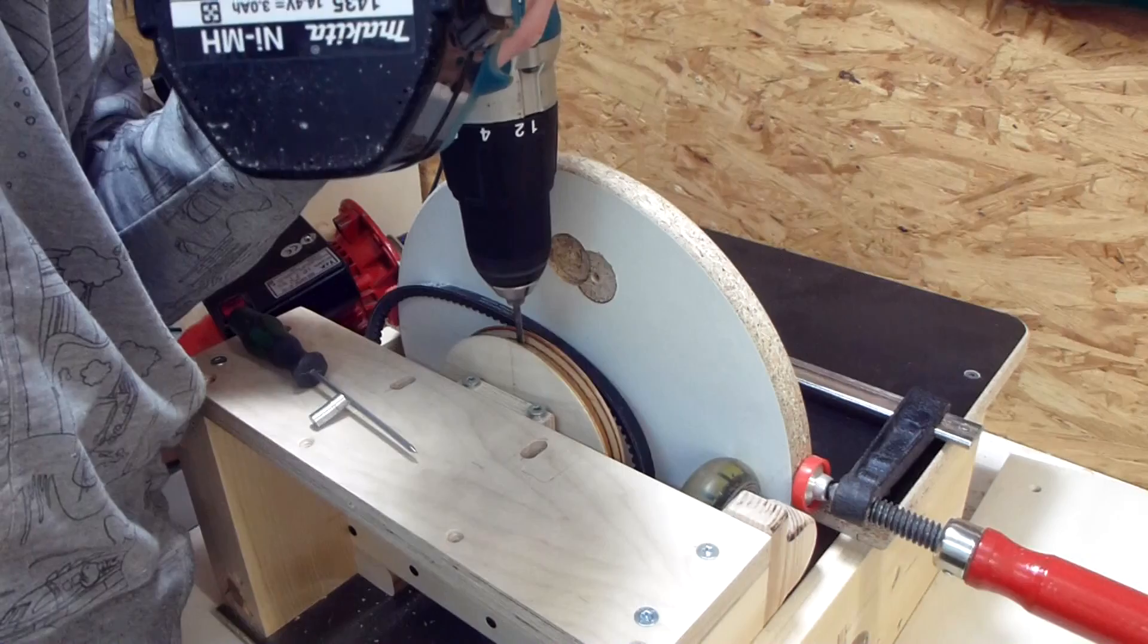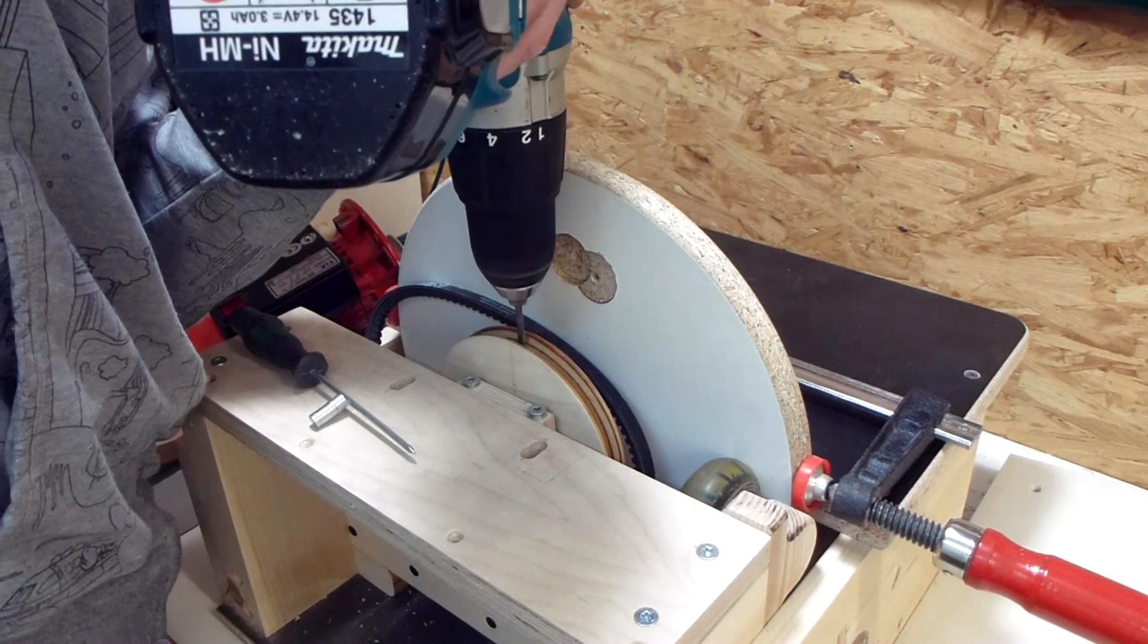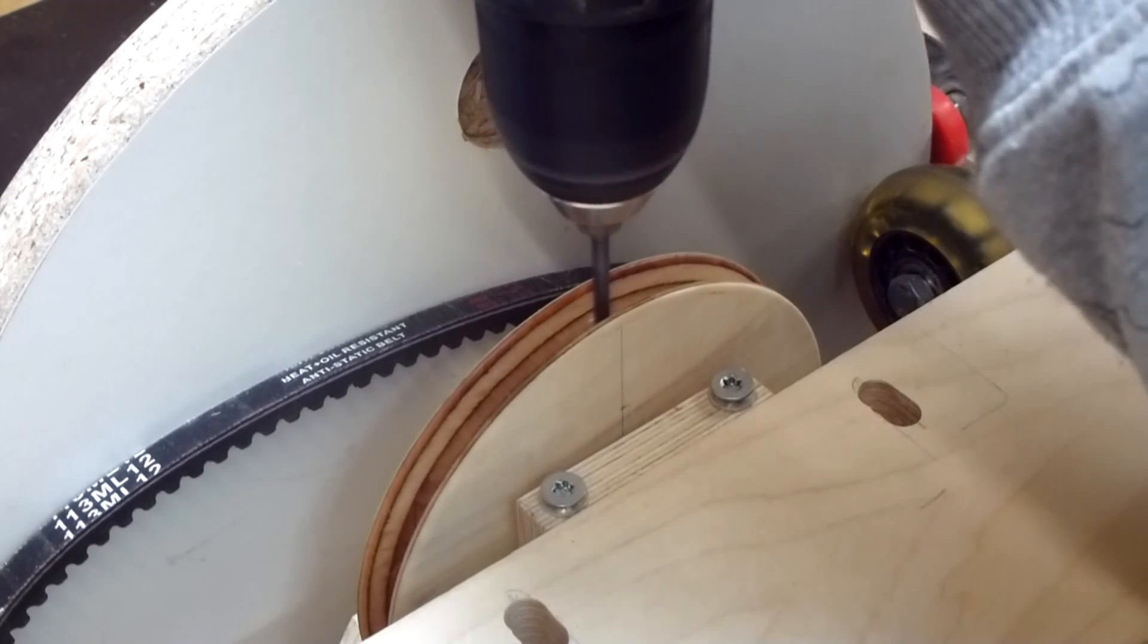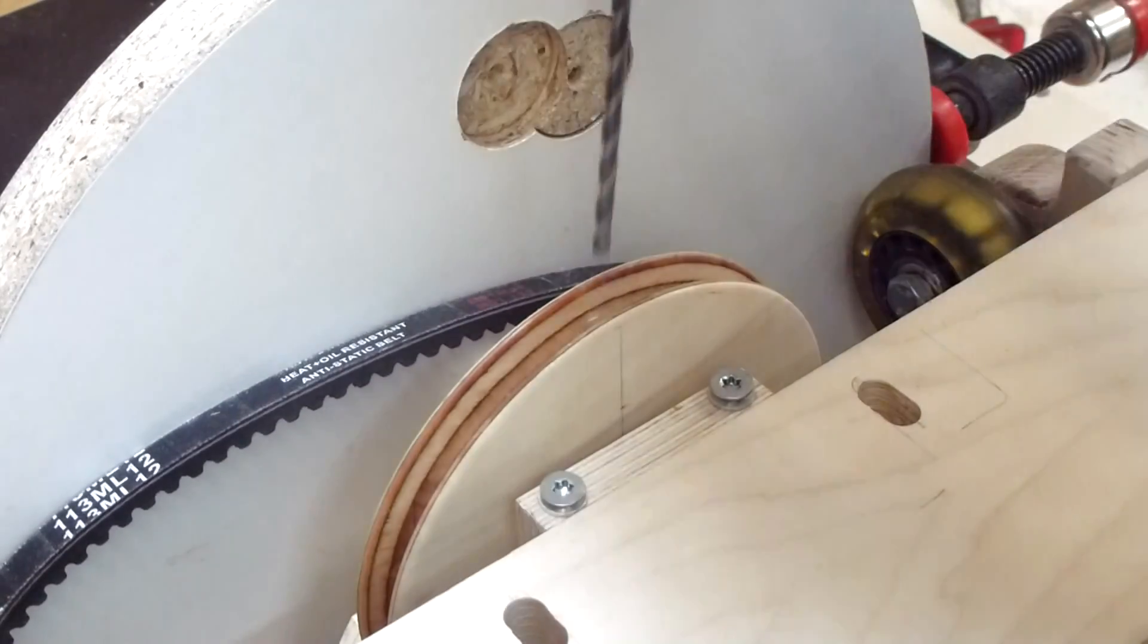So far there were two set screws through the pulley which pressed onto the shaft. But obviously that friction was not enough, so I drilled a hole into the shaft with the pulley in place.